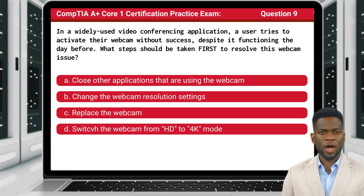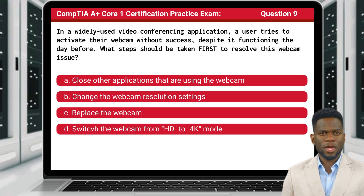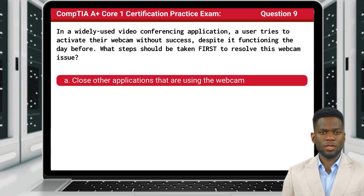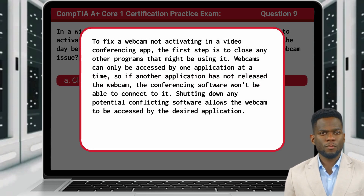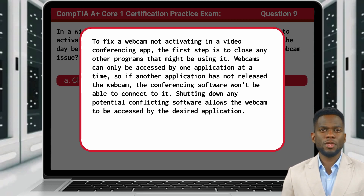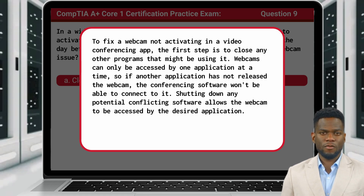Question 9. In a widely used video conferencing application, a user tries to activate their webcam without success, despite it functioning the day before. What steps should be taken first to resolve this webcam issue? The answer is A, close other applications that are using the webcam. Webcams can only be accessed by one application at a time, so if another application has not released the webcam, the conferencing software won't be able to connect to it. Shutting down any potential conflicting software allows the webcam to be accessed by the desired application.